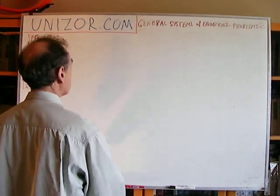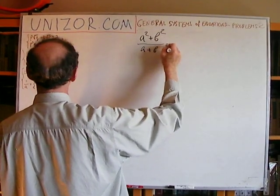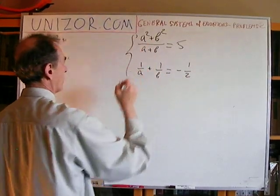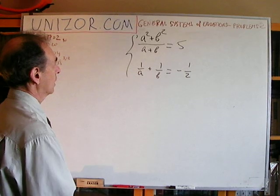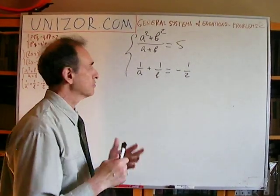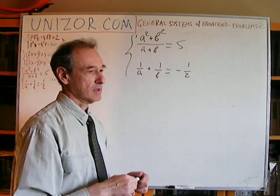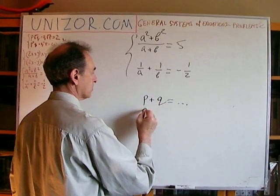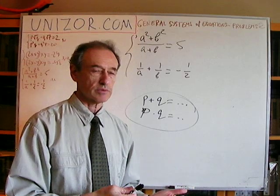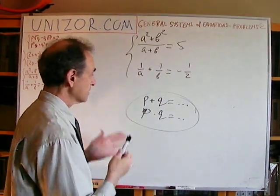The last problem: (A-squared plus B-squared) divided by (A plus B) equals 5; and 1 over A plus 1 over B equals minus one-half. What I suggest, again, is something you really have to notice. These are symmetrical things. You may remember the system P plus Q equals something, P times Q equals something — that's a typical example very easy to solve. If you can reduce your system to that form, you make your life much easier. That's what I'm aiming for.